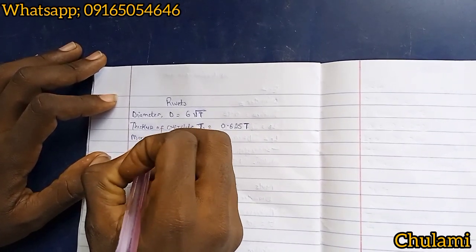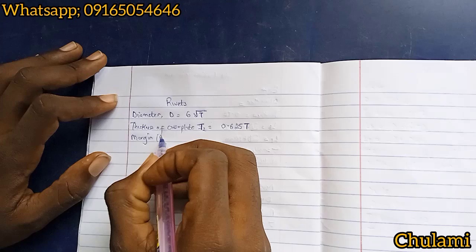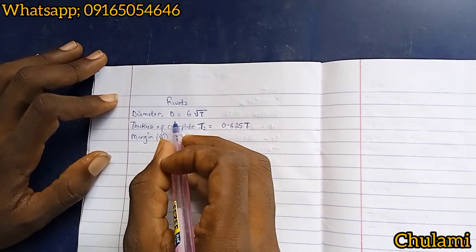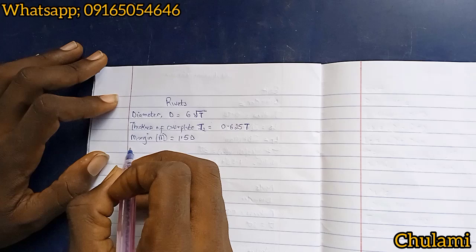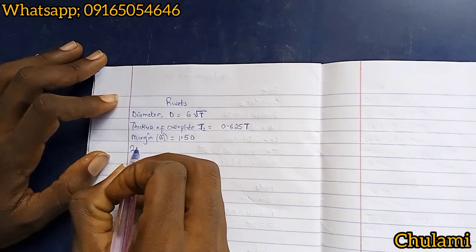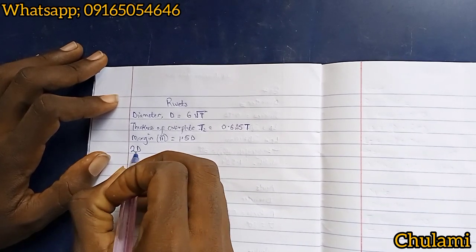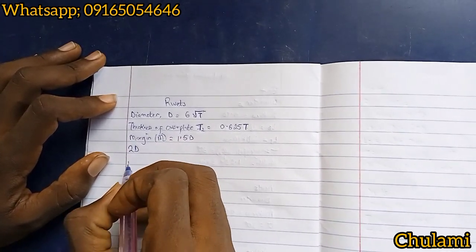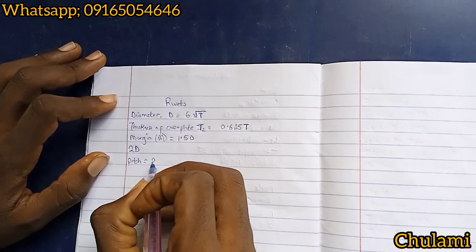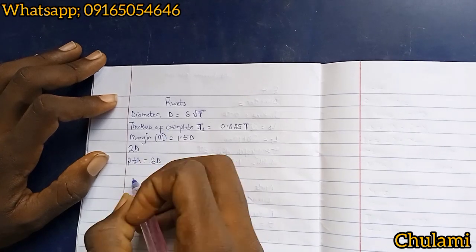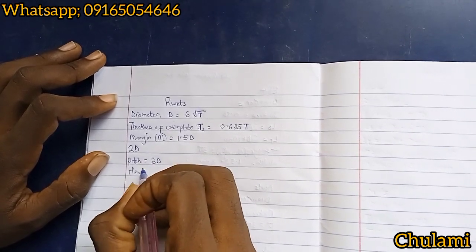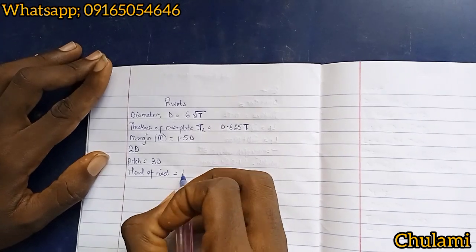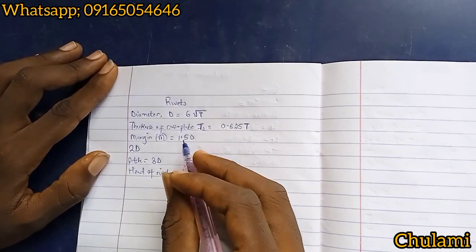Now we know that margin m is equal to 1.5d, where d here is diameter. Distance between two paired rivets is 2d, where d here is diameter too. Now we have pitch, which is equal to 3d where d is diameter. We have the head of rivets, that is our rivets head, is equal to 1.6d where d here is diameter too.